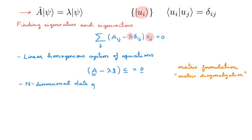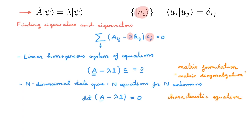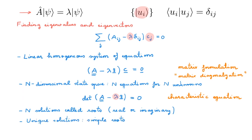For an n-dimensional state space we have n equations for n unknowns, and mathematically the solution is found by setting the determinant of the coefficients to 0. This is called the characteristic equation, and solving it allows us to find the eigenvalues lambda. The characteristic equation is an nth-order polynomial equation for lambda, and such an equation has n solutions — typically called its roots — which in this context are the eigenvalues. For a general operator A, these n solutions can be real or imaginary numbers, and they can be unique, in which case we call them simple roots, or some can be repeated, in which case we call them multiple roots.